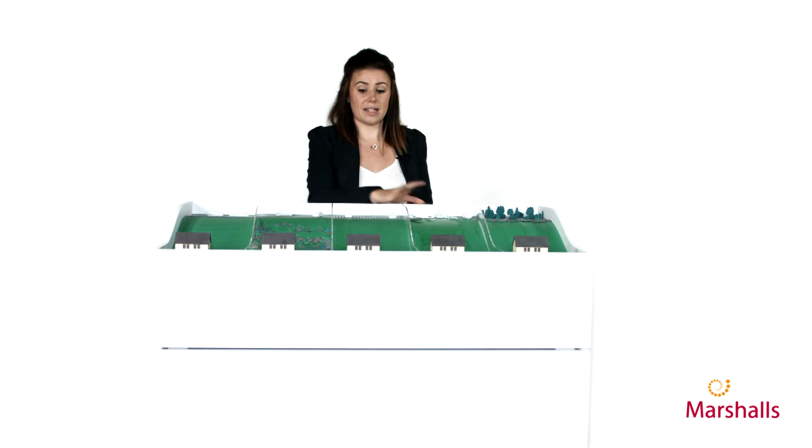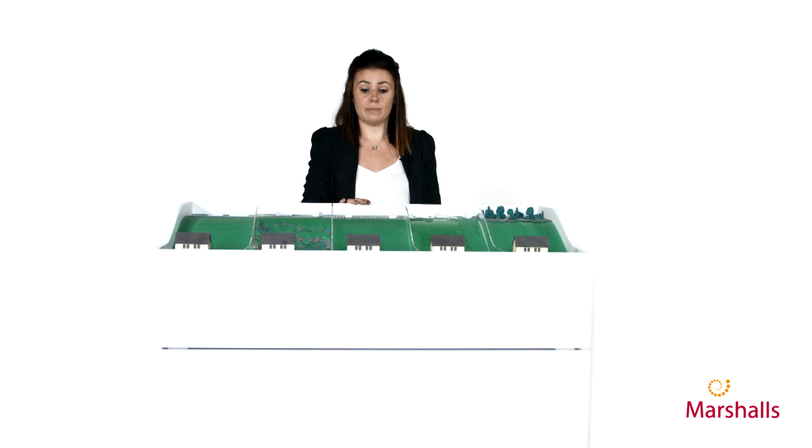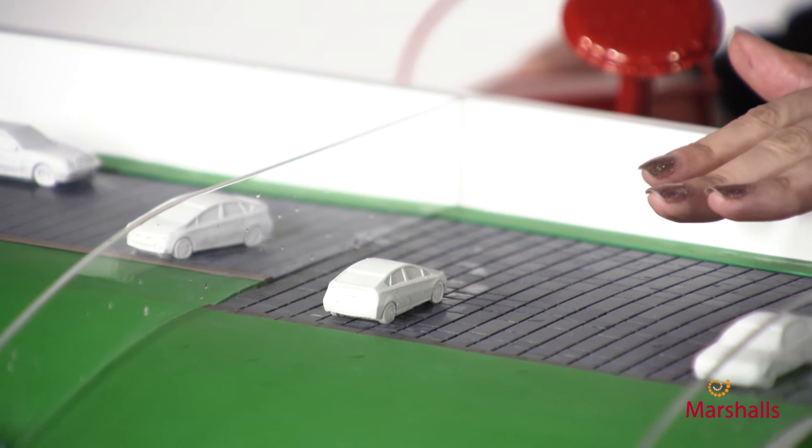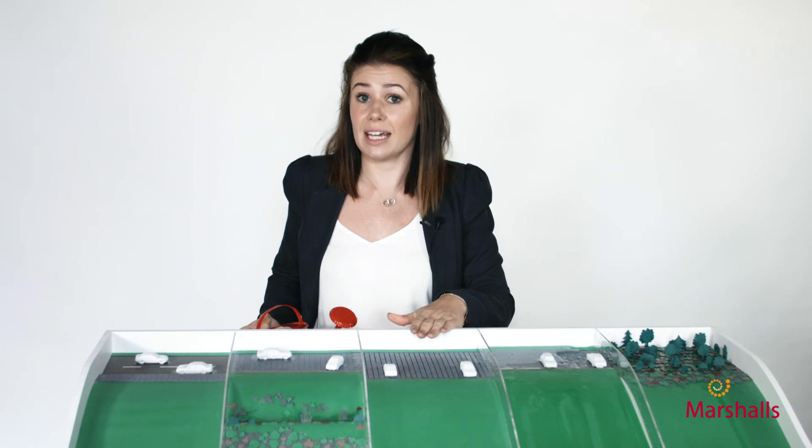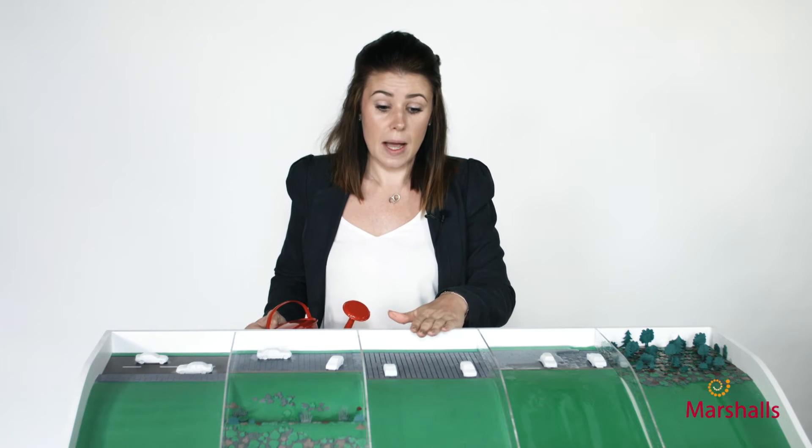Now another version of a tarmacked area is to have permeable paving. So this is one example that we've shown today, and basically it's a hard standing surface which can take large trafficked vehicles, but it also allows the water to penetrate through as it rains, so this will stop flooding downstream.